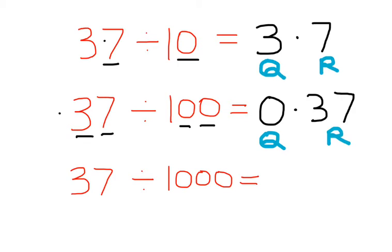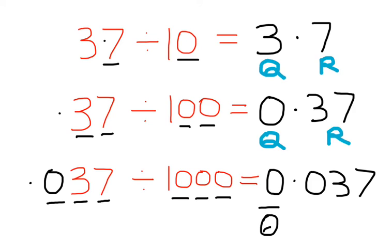37 divided by 1000. We have three zeros, so we need to count three digits: one, two—oops, there are no more digits left. So first you have to convert 37, which is a two-digit number, to a three-digit number. How will we convert it? Just simply by putting a zero in the front of 37. So now it is 037. We have changed 37 to 037 because here we have three zeros in 1000. So now we have three digits here and now we can put the point. So our answer is 0.037. This is your quotient and this is the remainder.